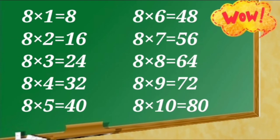8 ones are 8, 8 twos are 16, 8 threes are 24, 8 fours are 32, 8 fives are 40, 8 sixes are 48, 8 sevens are 56, 8 eights are 64, 8 nines are 72, 8 tens are 80.